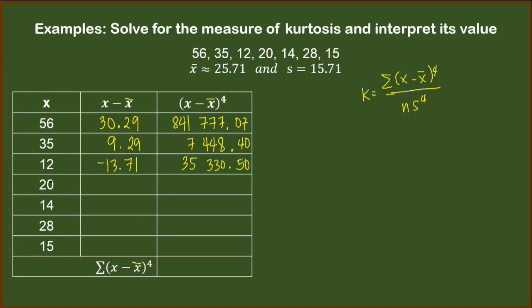Next, we have 20. 20 here minus 25.71 will give us negative 5.71. Again, raise that to the 4th power. We have 1,063.03.